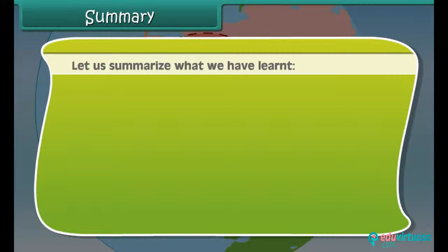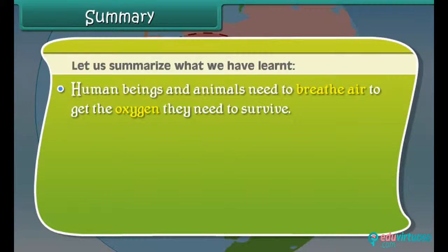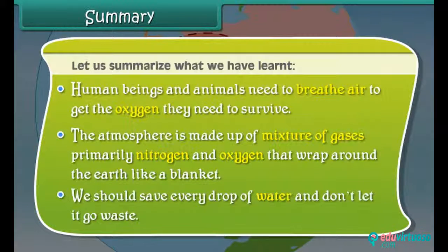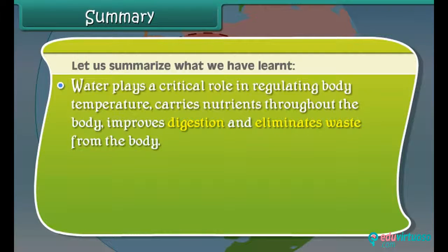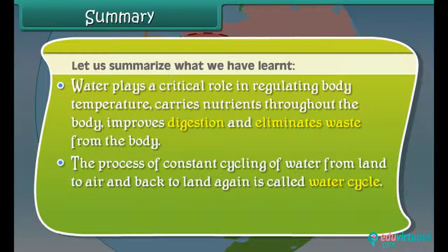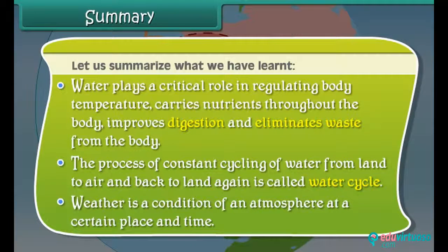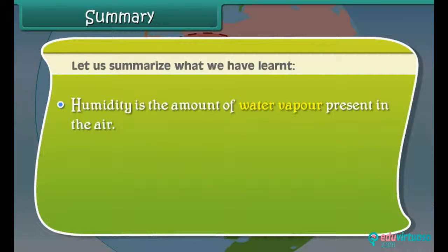Let us summarize what we have learned. Human beings and animals need to breathe air to get the oxygen they need to survive. The atmosphere is made up of a mixture of gases, primarily nitrogen and oxygen, that wrap around the earth like a blanket. We should save every drop of water and not let it go to waste. Water plays a critical role in regulating body temperature, carries nutrients throughout the body, improves digestion, and eliminates waste. The process of constant cycling of water from land to air and back to land again is called the water cycle. Weather is a condition of an atmosphere at a certain place and time. Humidity is the amount of water vapor present in the air. An area's long-term weather patterns determine the climate.